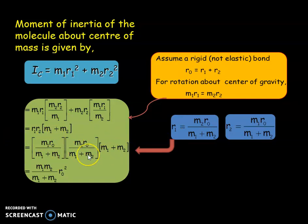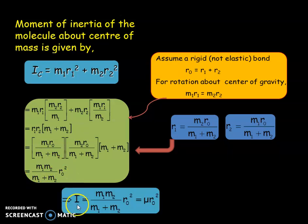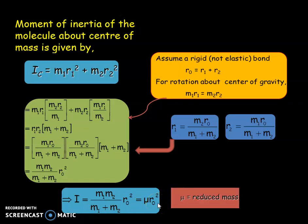If we substitute these values of R1 and R2 to the equation, we will get the equation as, and when shortened, it will become M1 M2 by M1 plus M2 into R0 square. That is, I equal to mu R0 square, where mu which is M1 M2 by M1 plus M2 is called the reduced mass of the system.